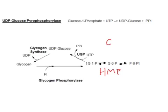Remember, glucose is phosphorylated by hexokinase or by glucokinase, depending on liver or regular tissues. Liver is the one with glucokinase, every other tissue has hexokinase. And that's phosphorylated to HMP using, of course, ATP.